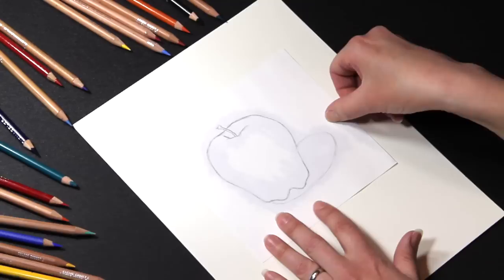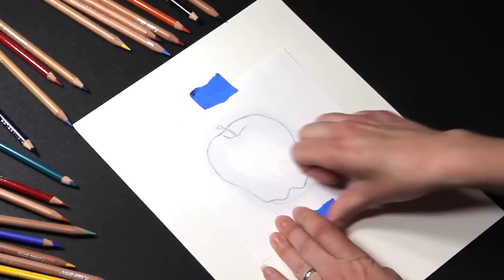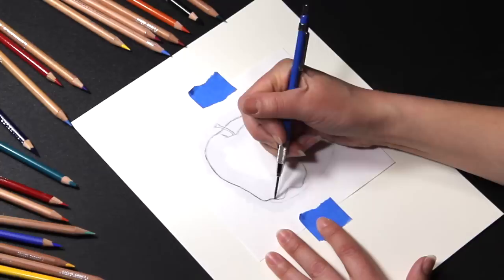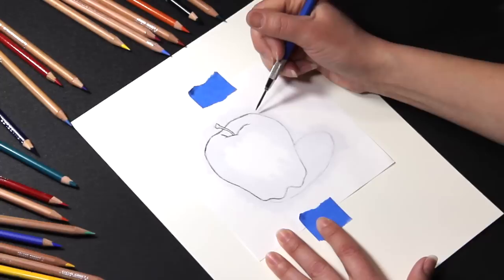I then place my sketch paper over my final surface, secure it in place with an easy to remove tape, and trace the outline. I am using a medium amount of pressure as I trace the outline. Heavy pressure could damage the final paper, and light pressure will result in the transfer process not working.